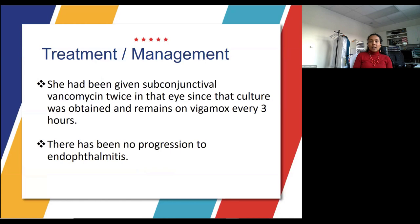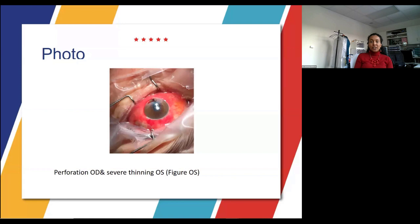Treatment included subconjunctival vancomycin twice in the right eye, and she remained on Vigamox every three hours. Fortunately, there was no progression to endophthalmitis. The image shown here demonstrates severe corneal thinning in her left eye.